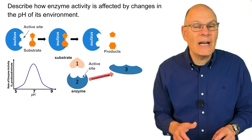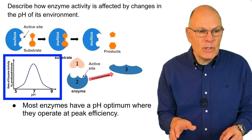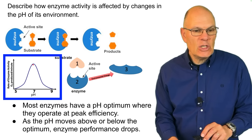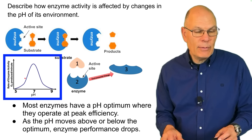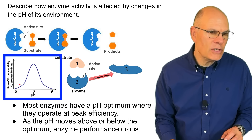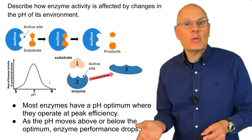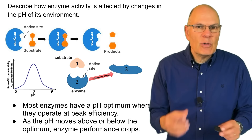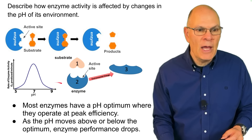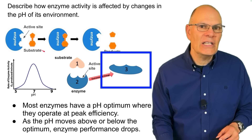Describe how enzyme activity is affected by changes in the pH of its environment. Most enzymes have a pH optimum where they operate at peak efficiency. As pH moves above or below the optimum, enzyme performance drops. Why? It's because enzymes are proteins — if you change the pH, you disrupt the bonds that hold that protein in its specific shape. The result is denaturation and a less good fit between the enzyme and its substrate.